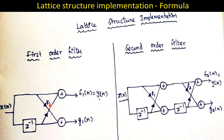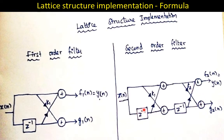For a first order filter you have only one filter coefficient k1, marked on the multipliers. The input is x(n) and the output is y(n). For a second order filter, you have two cascaded first order filter sections with two summers at each end, two delay elements in the bottom line, and two crisscross multipliers marked sequentially with k1 and k2.